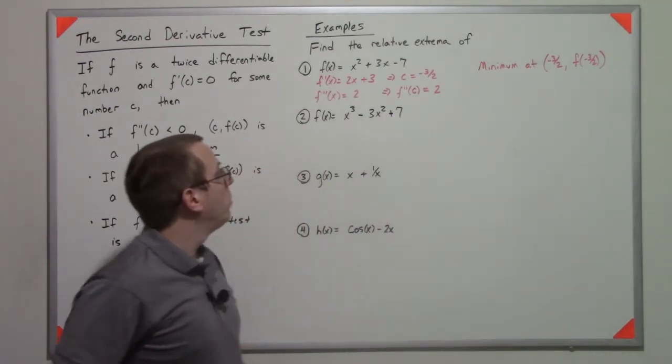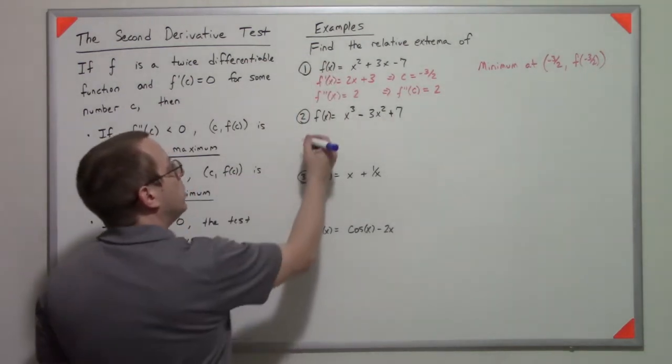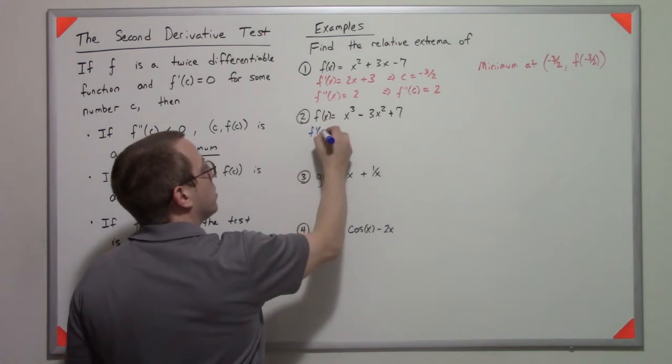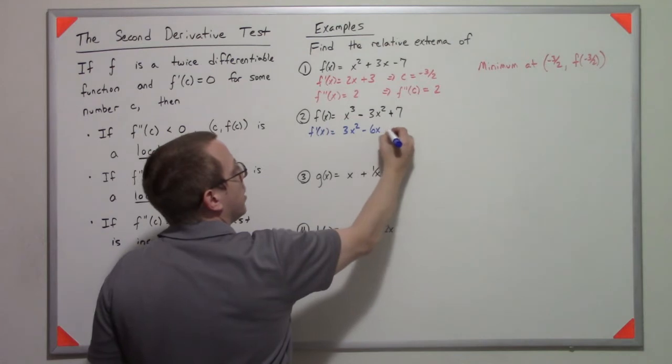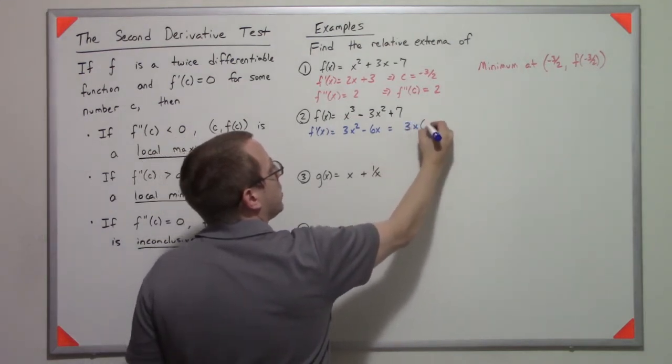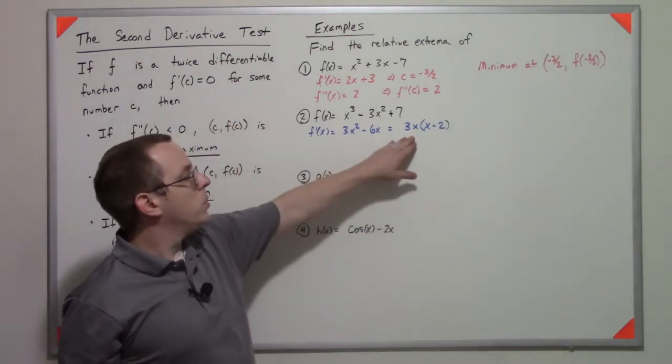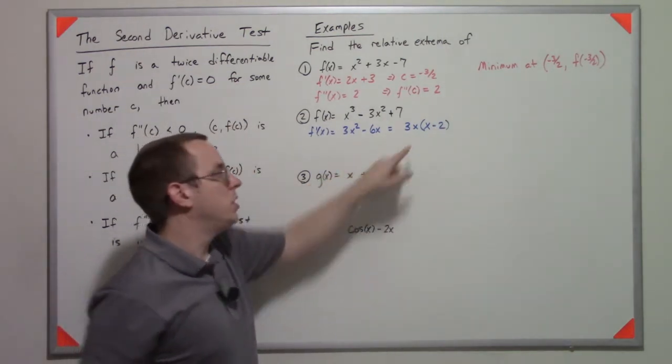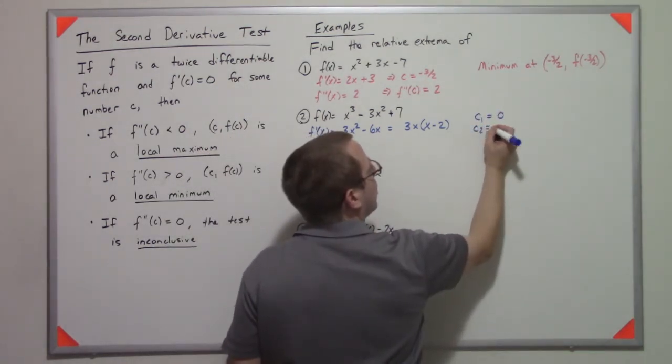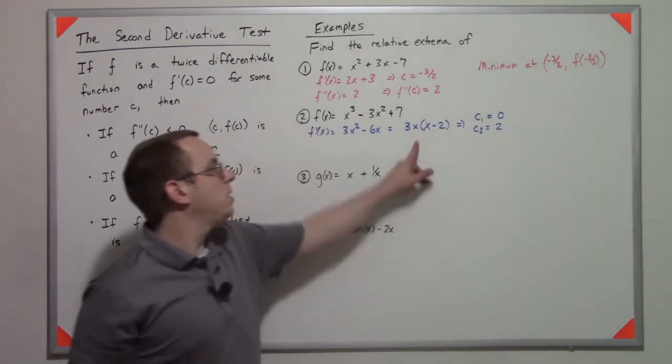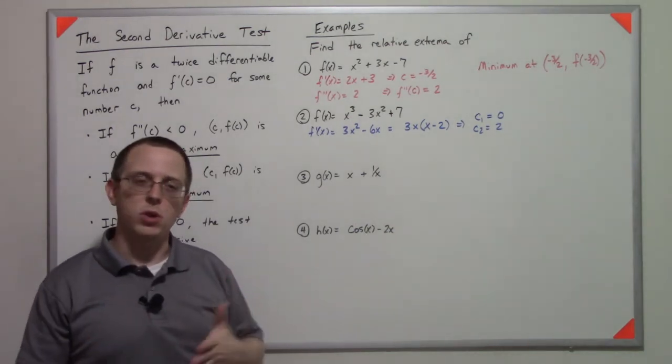So next problem, we have this function which looks similar but you end up with an extra x term. So if I take f'(x), I get 3x² - 6x, which is 3x(x - 2). So this function is equal to zero when x is zero or x is two. Those are my two values.